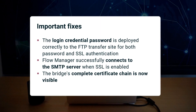In addition to these updates, several bugs have been fixed. Login credential password is deployed correctly in FTP transfer site for both password and SSL authentication. Flow Manager is now successfully connecting to SMTP server when SSL is enabled using StartTLS. The complete certificate chain of bridge is now visible. Find the complete list of updates, bug fixes, and product enhancements in the release notes linked in the description below.